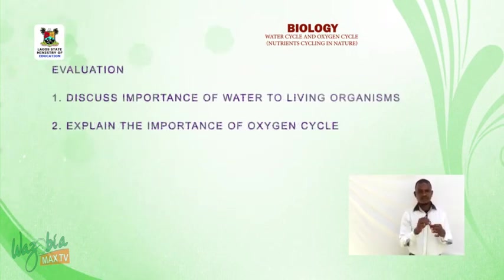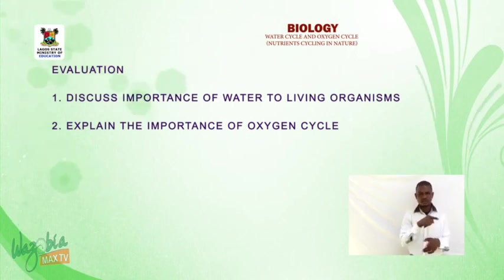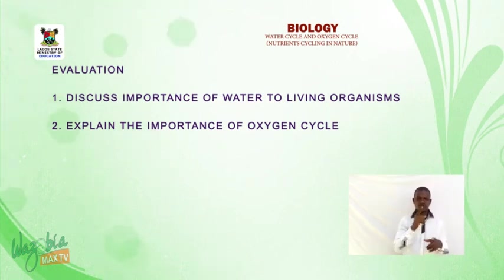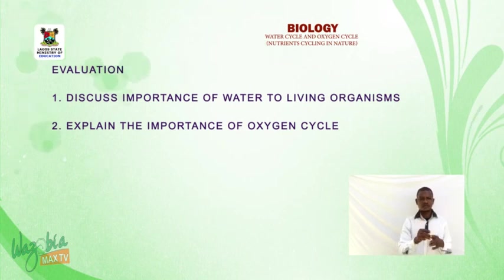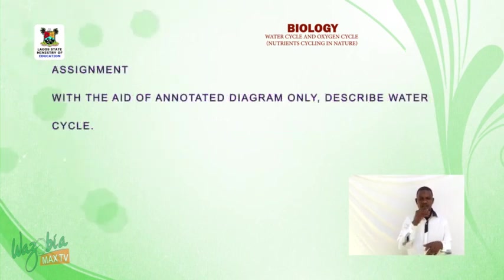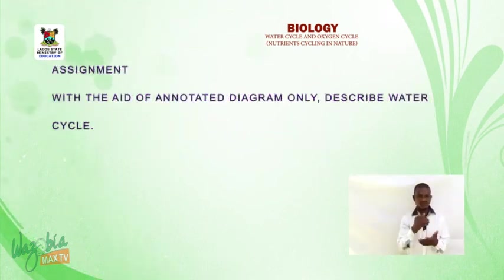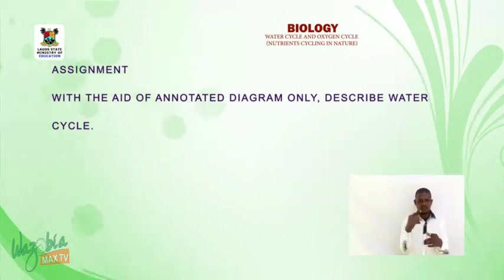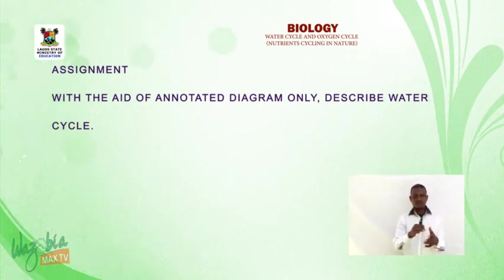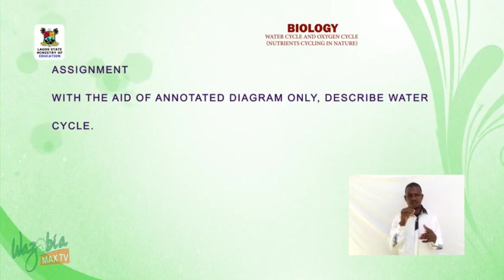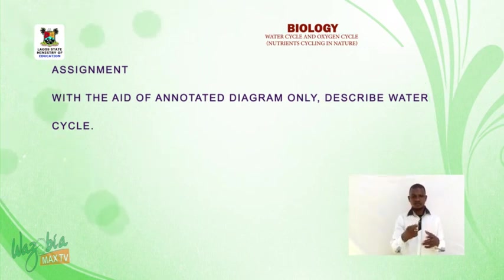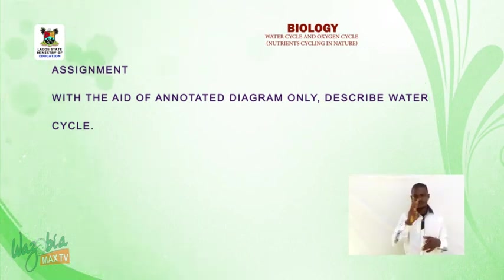Evaluation — you can take these questions for self-assessment: one, discuss the importance of water to living organisms; two, explain the importance of oxygen cycle. Assignment or take-home: with the aid of an annotated diagram only, describe the water cycle. Now we come to the end of the lesson. Thank you for listening. Bye.